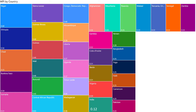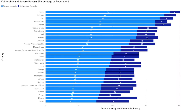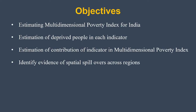While India's MPI of 0.12 is quite small compared to other countries, efforts still need to be taken to reduce poverty in India. Countries with higher poverty indices also tend to have severe poverty and high vulnerability to poverty — meaning a large proportion of people are close to being pushed into poverty. Vulnerability levels are also very high in high-MPI countries.